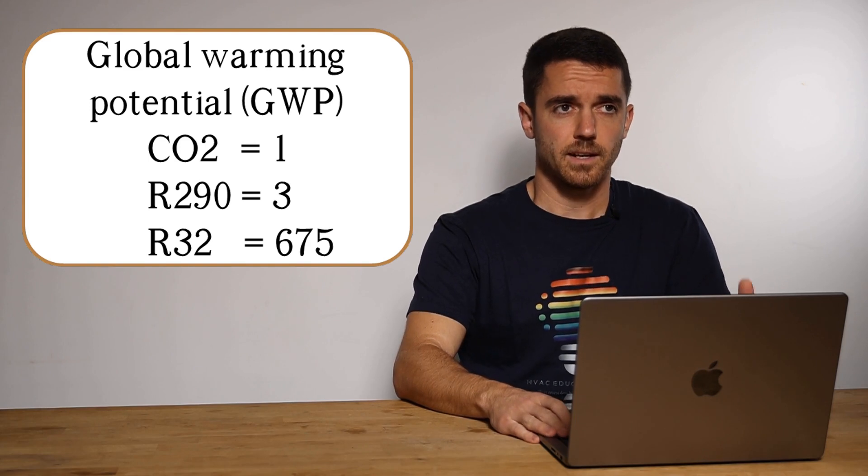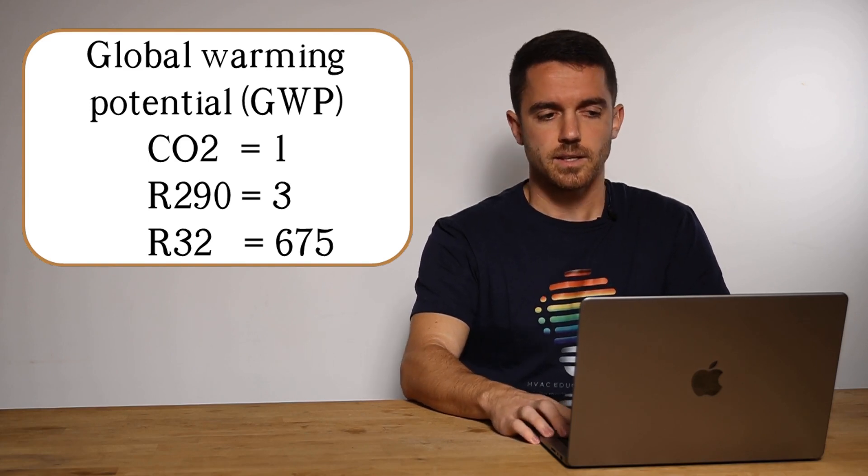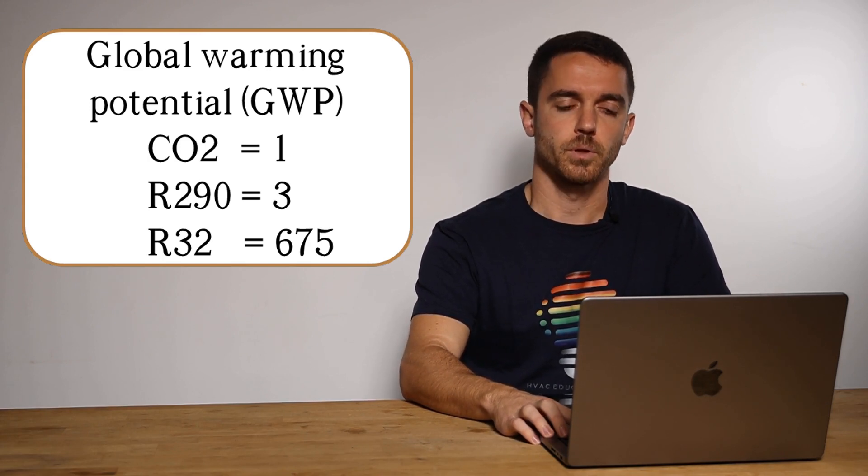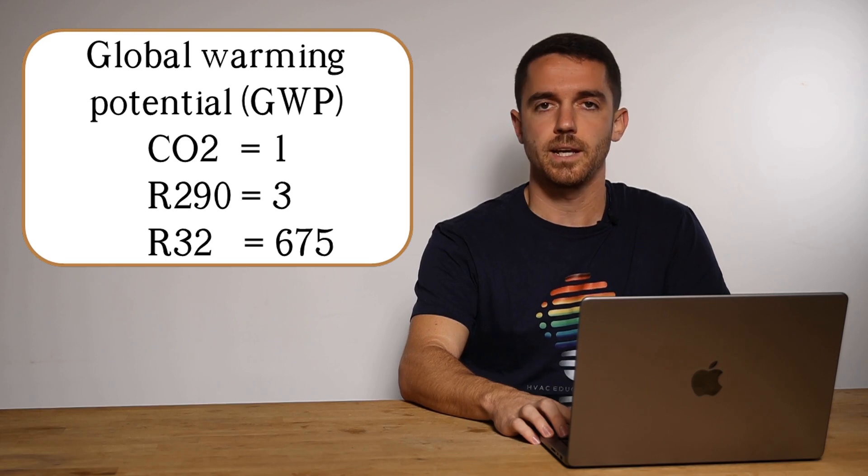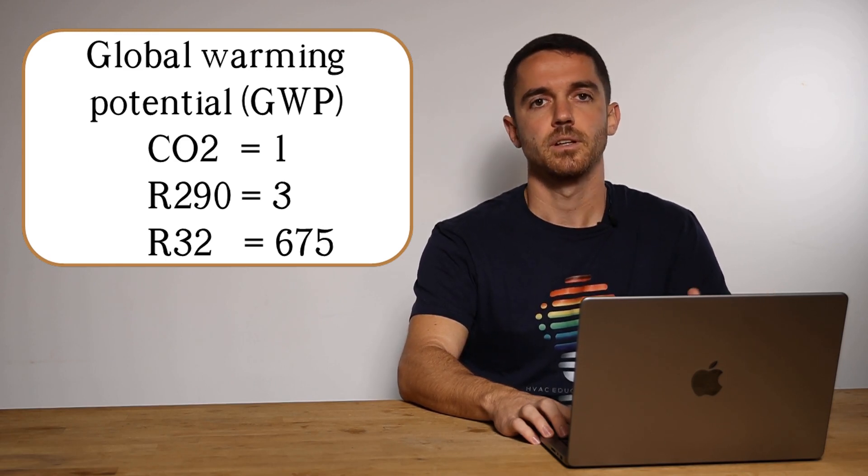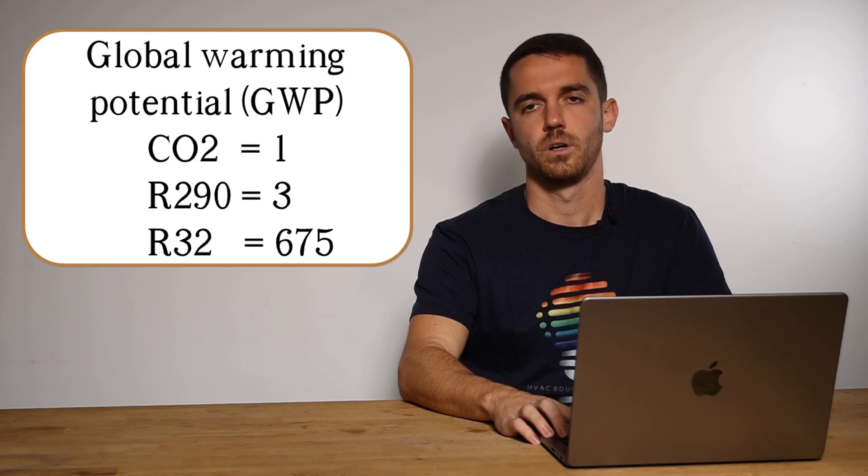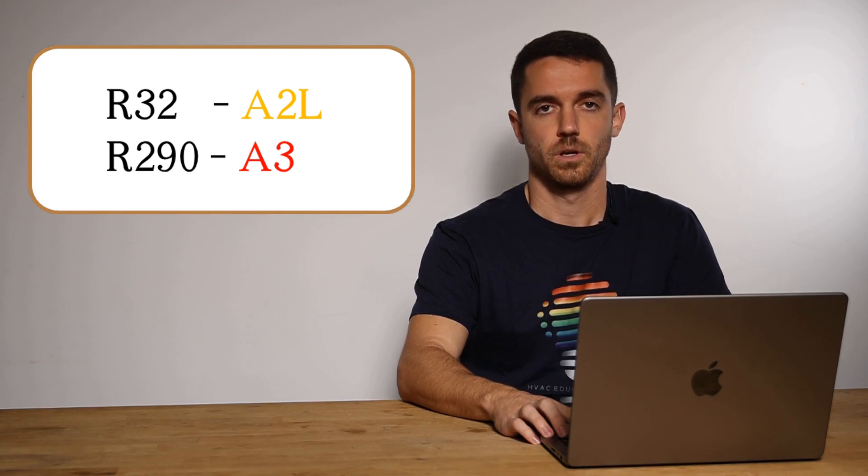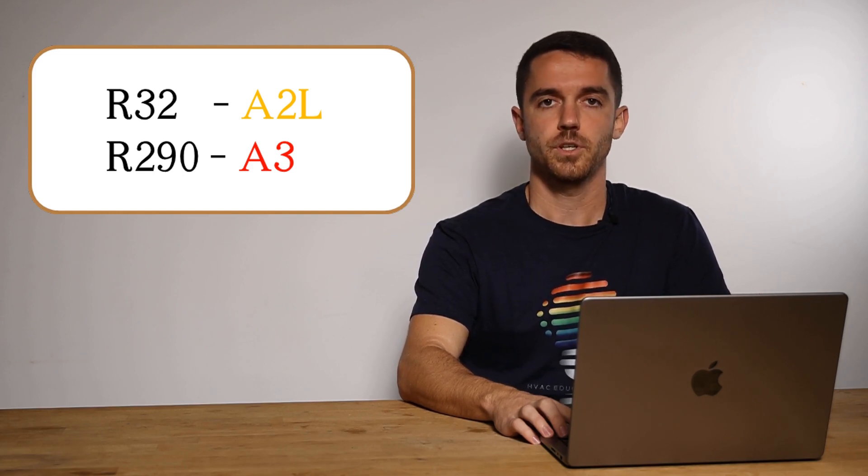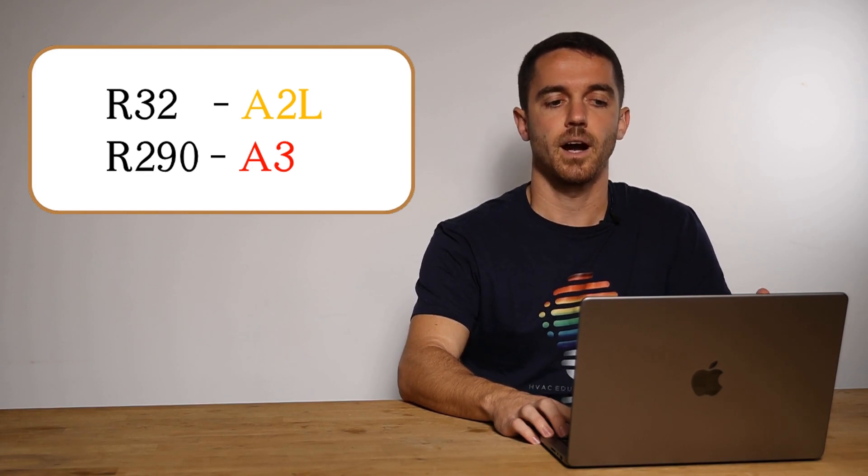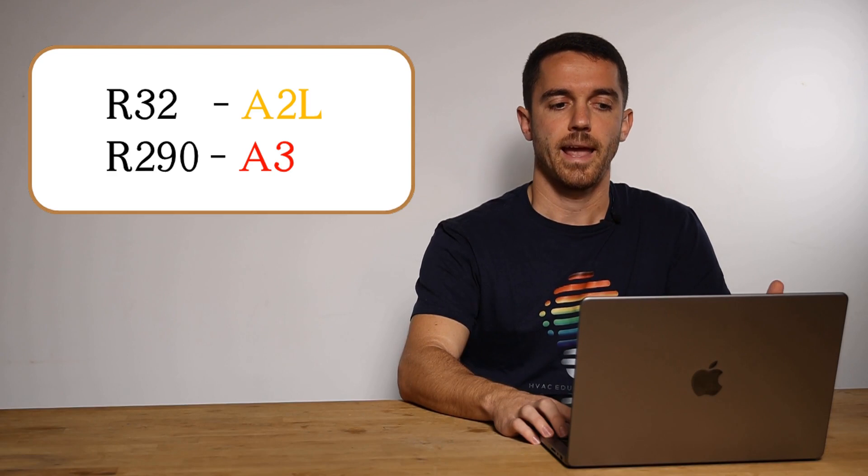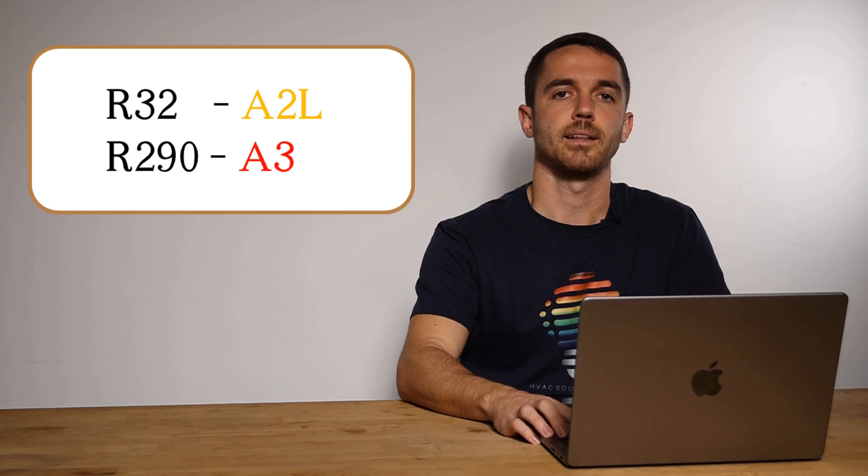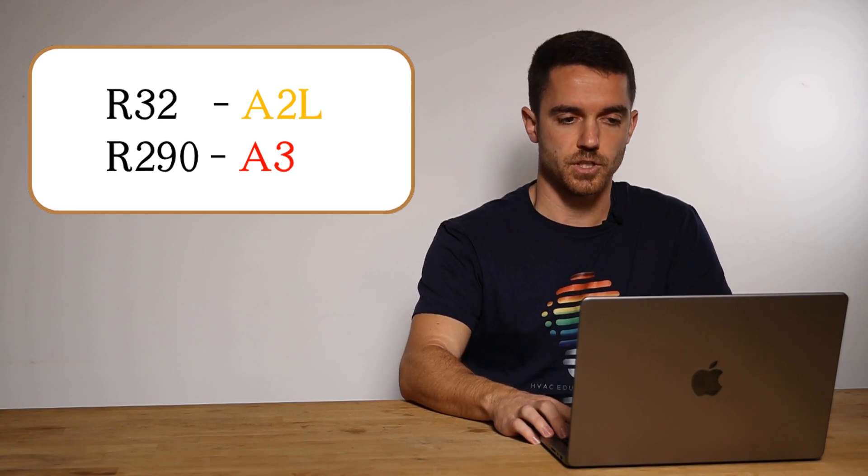The main thing about R290 is that it is known to have very low GWP, or global warming potential. It is around 3, it means natural refrigerant, not dangerous for our atmosphere. But if we compare it with R32, R32 is lower flammable refrigerant, grade A2L, and R290 is A3, it means higher flammability, so we need to take care that everything is safe when we are working with this refrigerant.